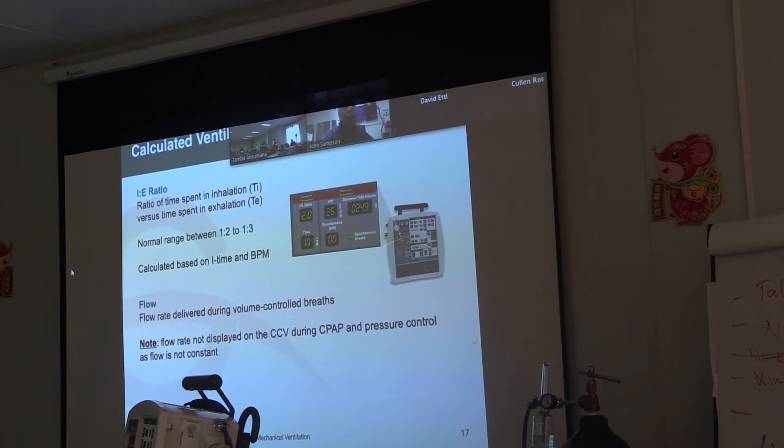I to E ratio, which we mentioned before briefly, is the ratio of the inspiratory time to the expiratory time. A normal I to E ratio would be one to two to one to three. So for every one second of inspiration, you might have two seconds or even three seconds of expiration. On this ventilator, you manipulate the I to E ratio by changing the inspiratory time, the I time.